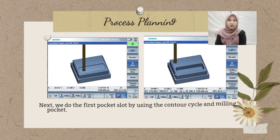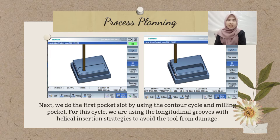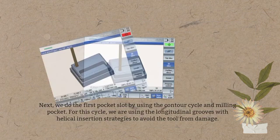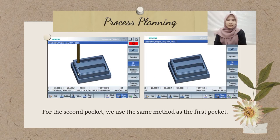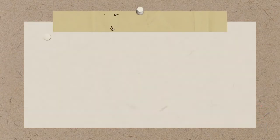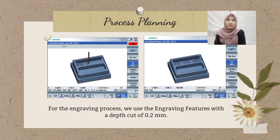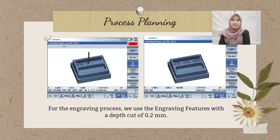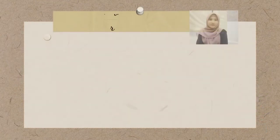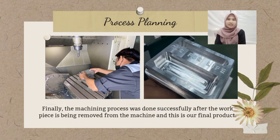Next, we do the first pocket slot by using the contour cycle and milling pocket. For this cycle, we are using the longitudinal groove with helical insertion strategies to avoid tool damage. For the second pocket, we use the same method as the first pocket. For the engraving process, we use the engraving features with a depth of cut of 0.2mm. Finally, the dimensioning process was completed successfully after the workpiece was removed.